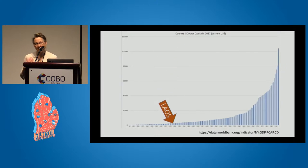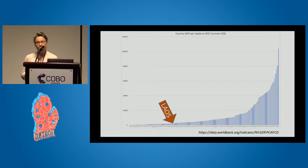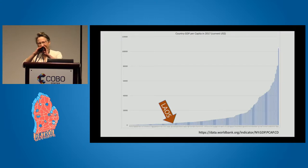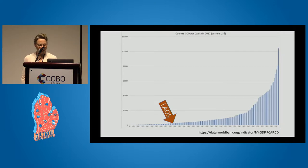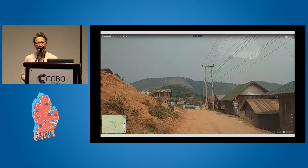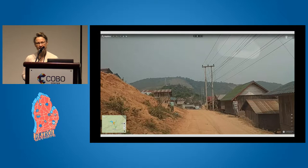Laos is also very poor. Their GDP has been growing by about 7% per year, mostly based on agriculture and exports of hydropower. But they're already starting to reach the limits of how far they can grow, largely because of their transportation network.